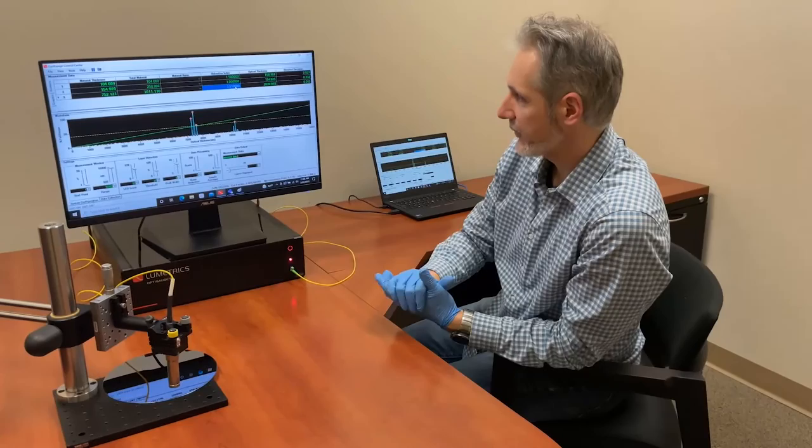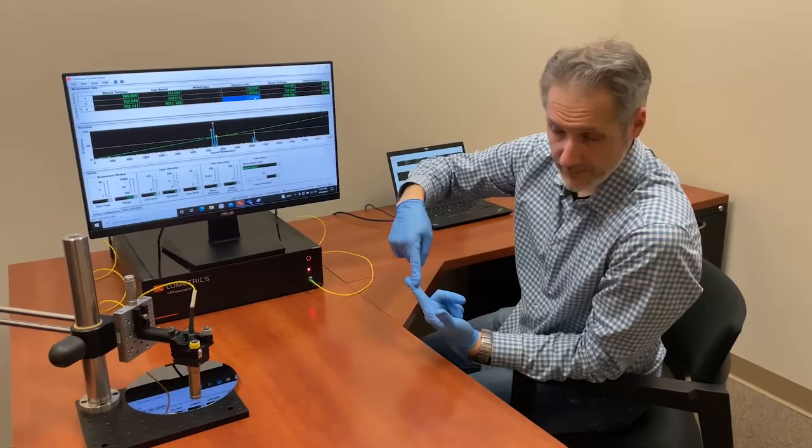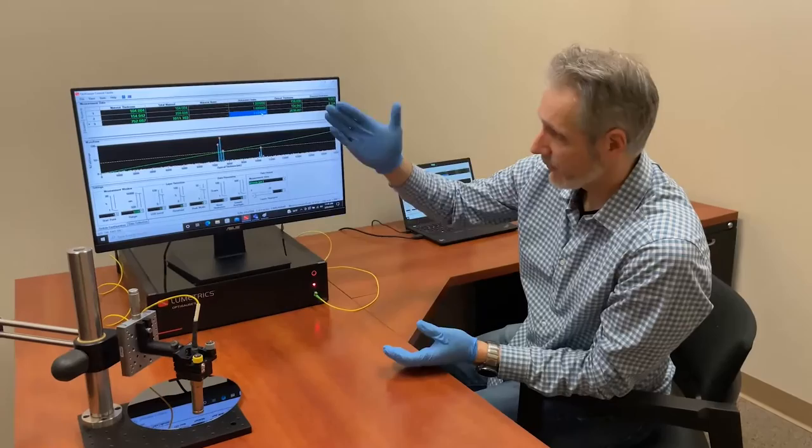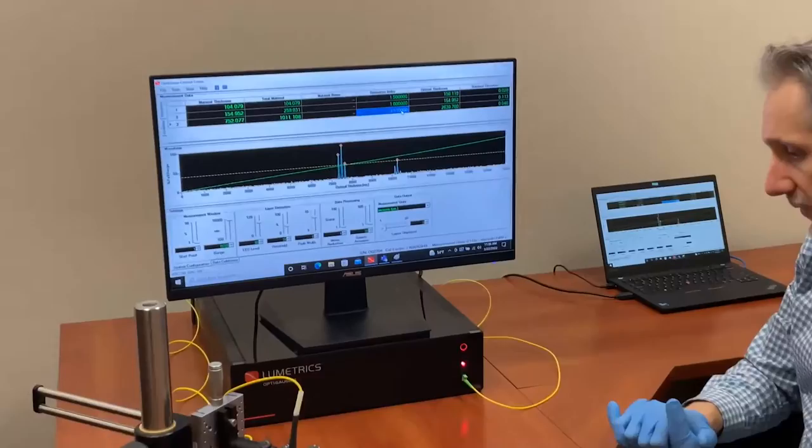And then again, we're measuring all the way through the sample. We're measuring through the glass on top. We're measuring through that gap, that bond void gap. And then we're measuring through the silicon sample. So we're seeing about a millimeter total thickness for everything all together there.